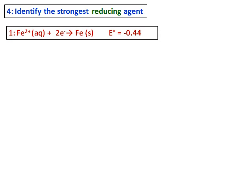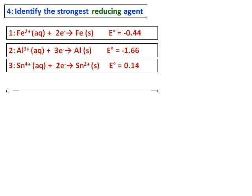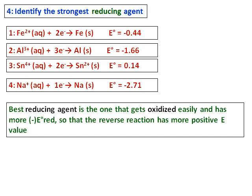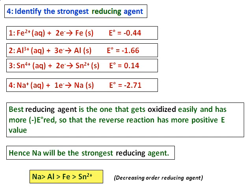Identify the strongest reducing agent. You are given four equations: Fe²⁺, Al³⁺, Sn⁴⁺, and Na. Out of the four, the third one has a positive E⁰ value while all others are negative. Therefore equations 1, 2, and 4 are spontaneous in reverse. The best reducing agent has the most positive oxidation reaction, so sodium — reaction 4 — with the most positive E⁰ value in the reverse direction is the best reducing agent. The order is: Na, then Al, then Fe, then Sn²⁺, in decreasing strength as reducing agent.